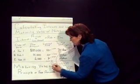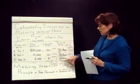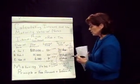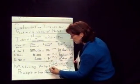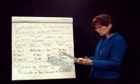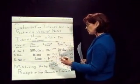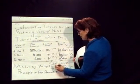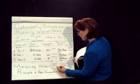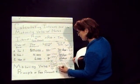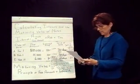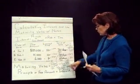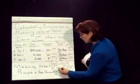Adding the 15 days in November and 31 days in December gives us 46 days total. We still haven't reached 60 days, so we're going on into the New Year — into January. If we take 60 minus 46, that gives us 14 days. So this note will be due on January the 14th.